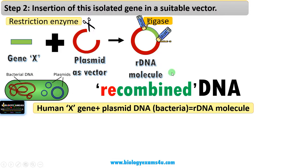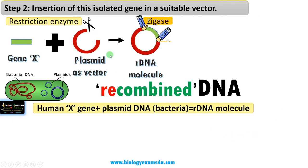Now we have a recombinant DNA molecule, or recombinant DNA, where this red region is the plasmid DNA from bacteria and this green region is the human gene X. These are combined to form the recombinant DNA molecule.